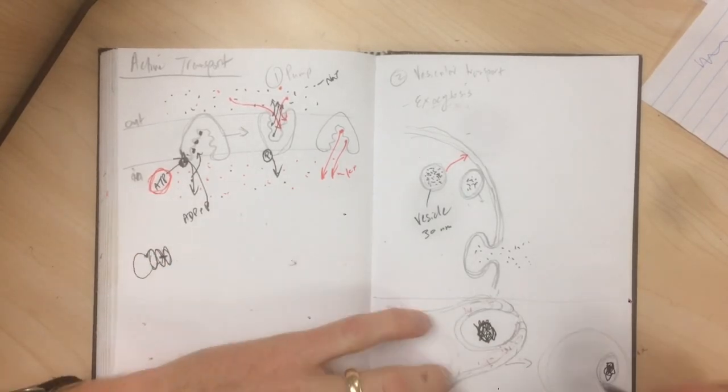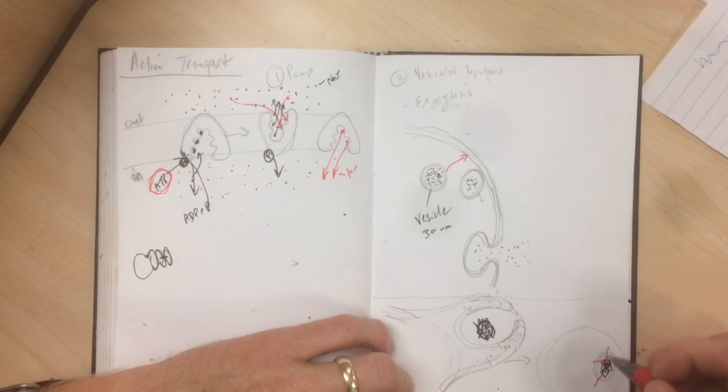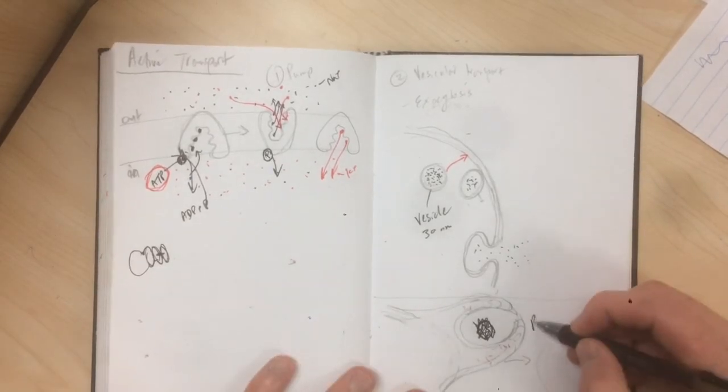Now the lysosome can inject all these digestive enzymes into that vesicle and destroy that thing and break it down so it's not a problem. That's called phagocytosis.